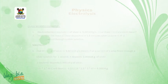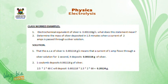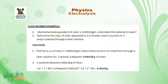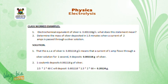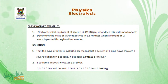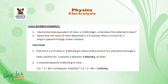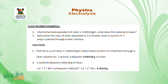Classwork example. The electrochemical equivalent of silver is 0.001118 g per coulomb. What does this statement mean? Solution: the ECE of silver means that when a current of 1 ampere flows through a silver solution for one second, it deposits 0.001118 g of silver. Part B: determine the mass of silver deposited in 1.5 minutes when a current of 2 amperes is passed through a silver solution. 1 coulomb deposits 0.001118 g of silver.